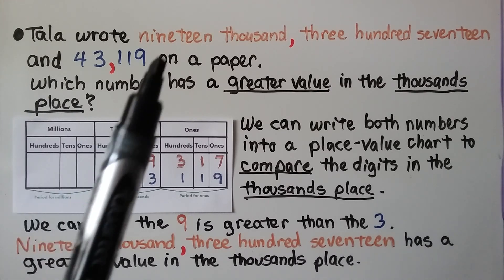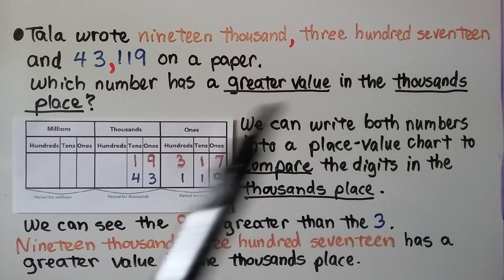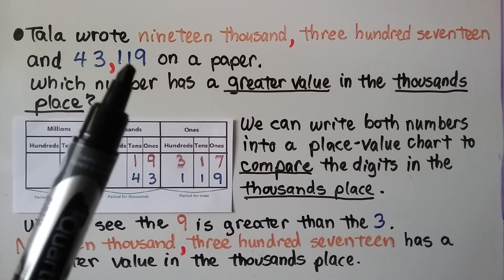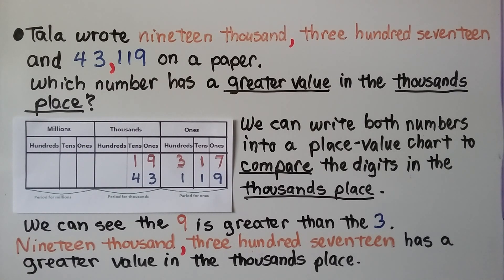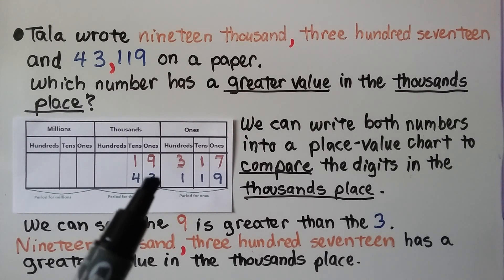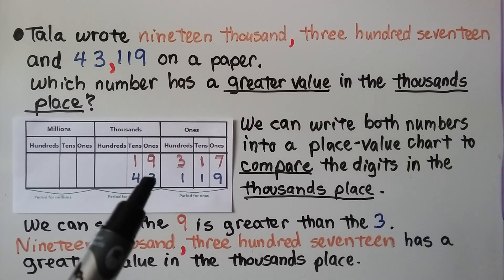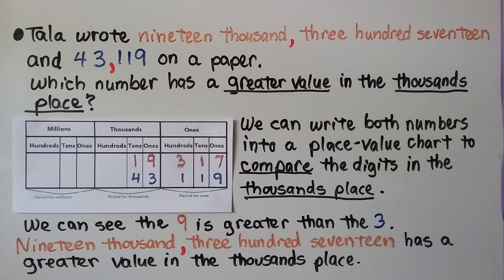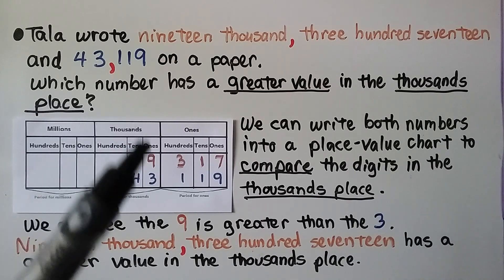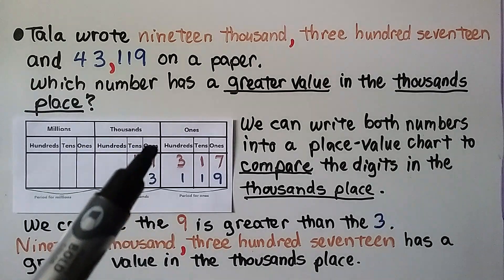Tala wrote 19,317 and 43,119 on paper. Which number has a greater value in the thousands place — meaning the one thousands place? We can write both numbers into a place value chart to compare. We have a nine and we have a three, and nine is greater than three. So 19,317 has a greater value in the thousands place. Note: it said thousands place, not thousands period.